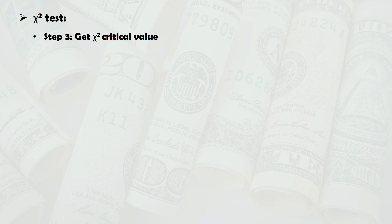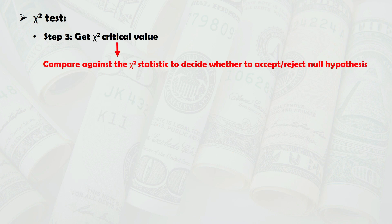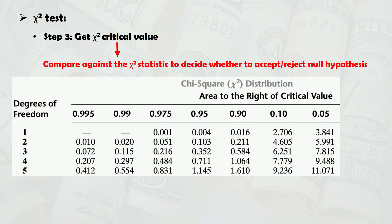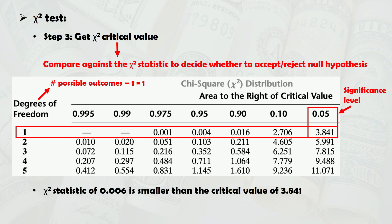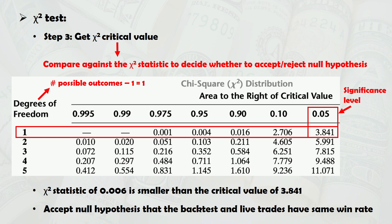Next, we need to obtain the chi-square critical value for the test. This critical value is compared to the test statistic to determine whether the null hypothesis should be accepted or rejected. To get this value, we refer to the chi-square distribution table, which is linked in the description. Similar to the t-test, we use a significance level of 0.05. The degrees of freedom equal the number of possible outcomes minus 1 — since we either win or lose, we have 1 degree of freedom. Together with a 0.05 significance level, we get a critical value of 3.84. Since our chi-square statistic of 0.006 is smaller than the critical value of 3.84, we accept the null hypothesis that the backtest and forward-test results have the same win rate, and any variability is likely due to chance alone.